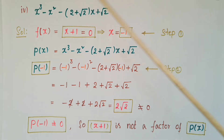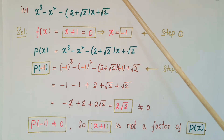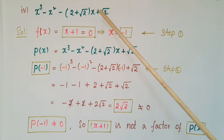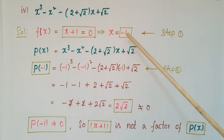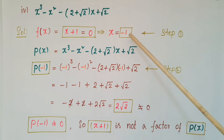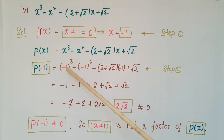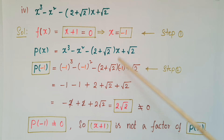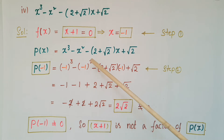This is another polynomial: x³ - x² - 2 + √2·x + √2. We have to check whether x plus 1 is a factor of this polynomial. We make x plus 1 equal to 0, so x equals minus 1, meaning a is minus 1. Now p(minus 1) equals (minus 1)³ minus (minus 1)² minus 2 plus √2 times (minus 1) plus √2. So (minus 1)³ is minus 1, and (minus 1)² is 1.